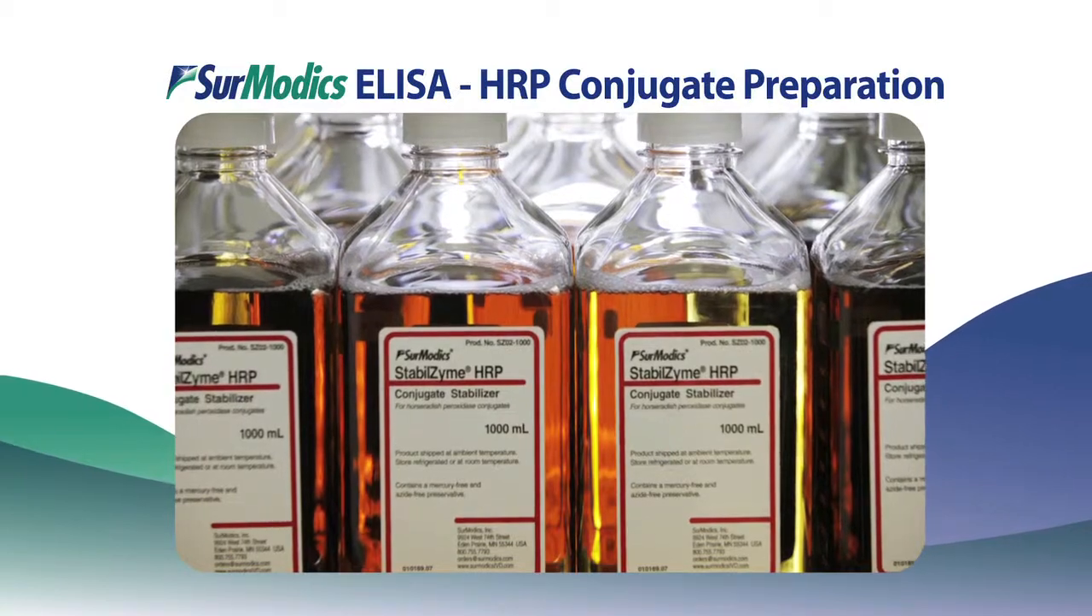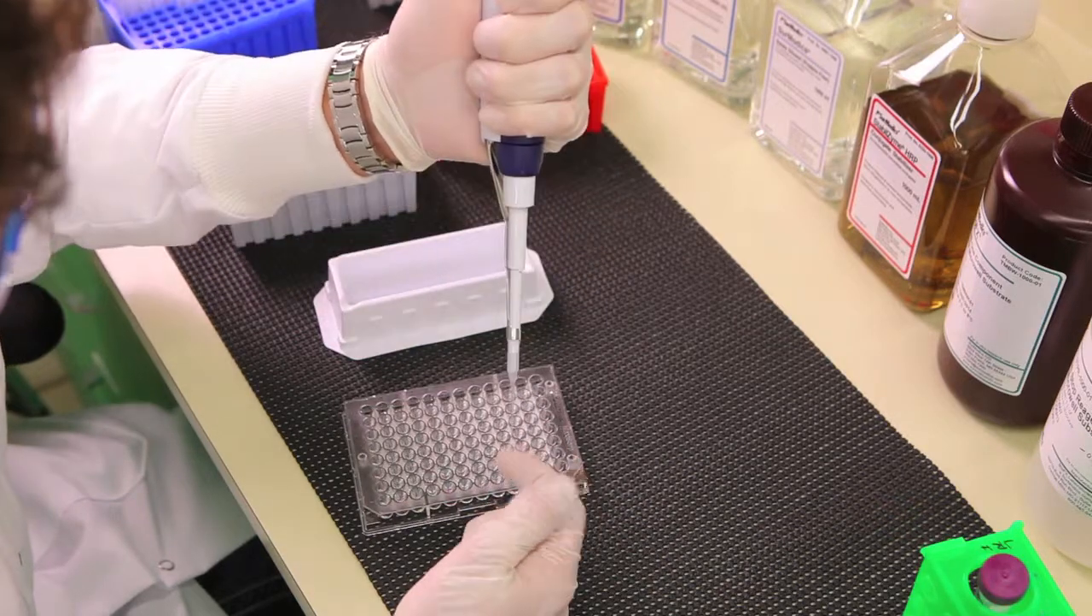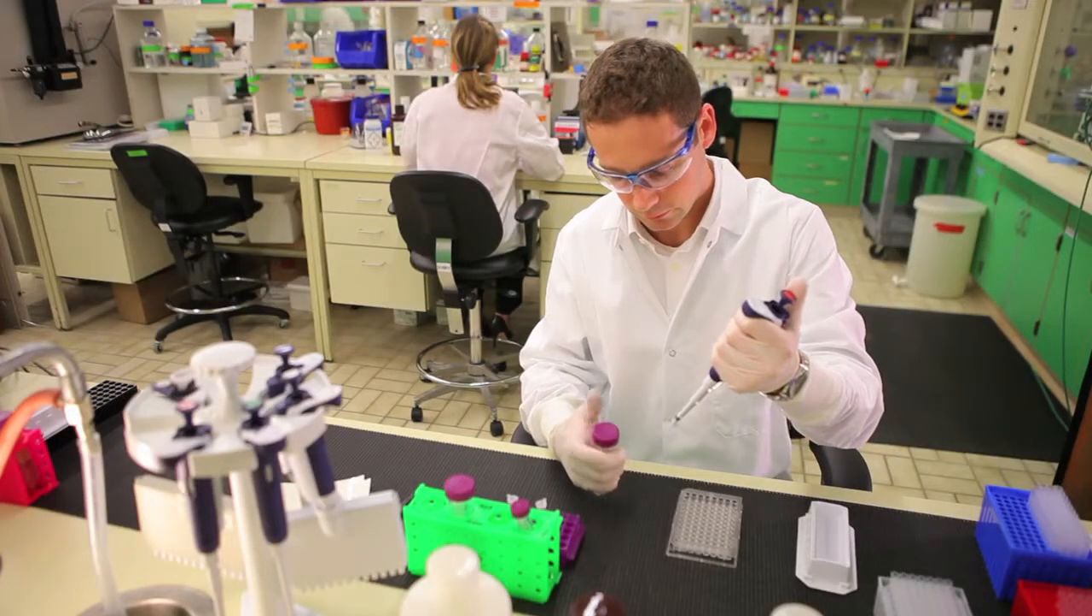Specifically formulated for horseradish peroxidase conjugate stability, Stablezyme HRP Stabilizer is easily incorporated into any assay. It provides the user with a conjugate diluent that preserves antibody integrity and HRP activity.